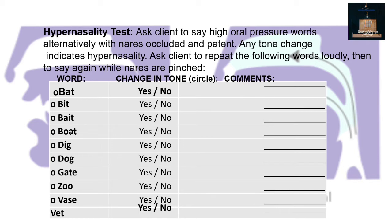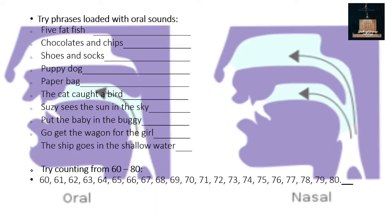Example words to use: bat, boat, dig, dog, gate, zoo, vase, and vet. Try phrases loaded with oral sounds — for example: five fat fish, chocolates and chips, shoes and socks, puppy dog, paper bag, the cat caught a bird, Susie sees the sun in the sky.